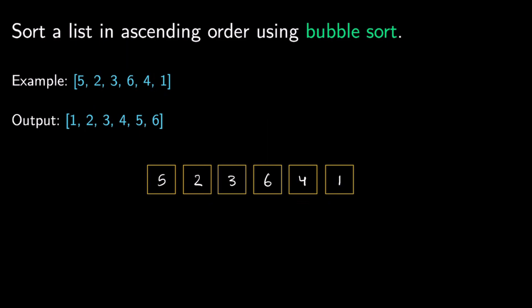The way that bubble sort works is that we're going to keep iterating through our list until it is sorted. In each iteration we're going to be comparing consecutive elements and swap them if they're out of order. So let's see how that works.